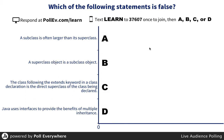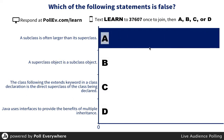Which one is false? Answer away. Go ahead. Text LEARN to 37607 to join. Once you join, you can press A, B, C, or D. Or you can go online at pollev.com/learn.